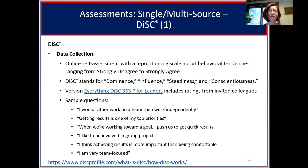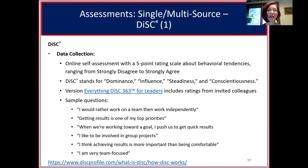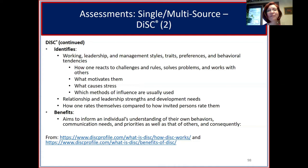The DISC assessment — Dominance, Influence, Steadiness, and Conscientiousness — is based on a five-point scale where folks rate themselves on different behavioral tendencies, from 'I strongly agree' to 'strongly disagree.' Sample questions include 'I would rather work on a team than work independently' or 'Getting results is one of my top priorities.' It helps identify working, leadership, and management styles, traits, preferences, and behavioral tendencies, and there is a version that allows for outside comments as well.